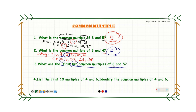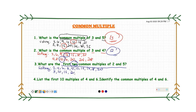Let's write the multiples of two through listing: two, four, six, eight, ten, twelve, fourteen, sixteen, eighteen, twenty. That's the first ten multiples of two. Now let's do the first ten multiples of five: five, ten, fifteen, twenty, twenty-five, thirty, thirty-five, forty, forty-five, and fifty.